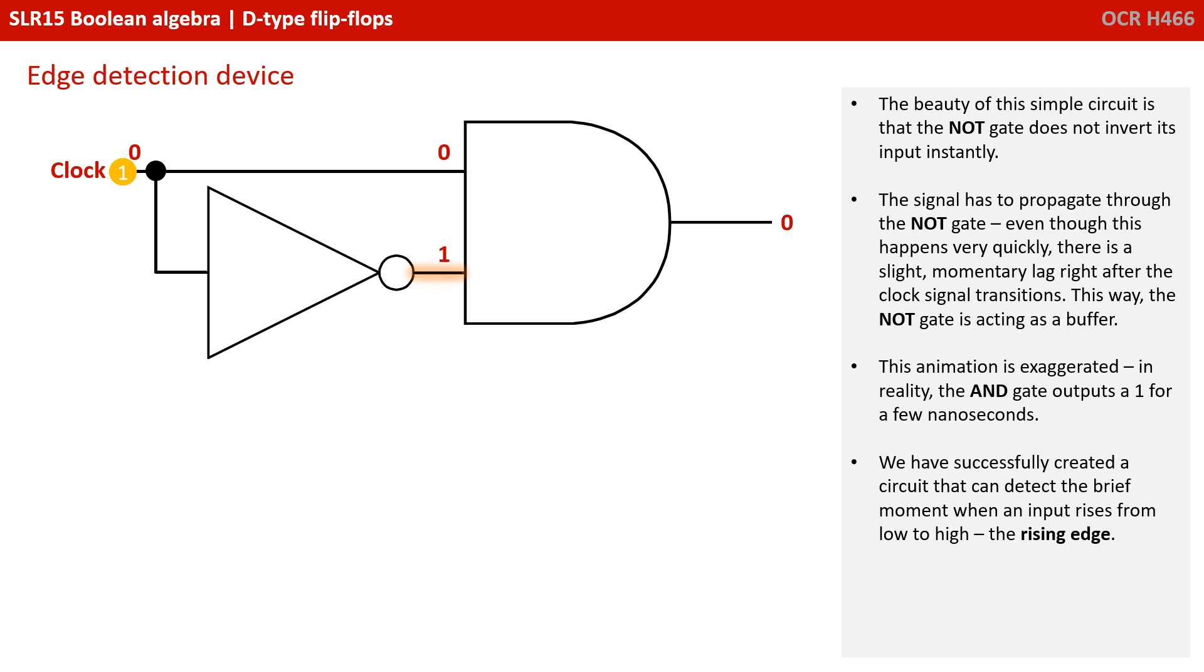The beauty of this simple circuit is that the NOT gate does not invert its input instantly. The signal has to propagate through the NOT gate. Even though this happens very quickly, there is a slight momentary lag after the clock signal transitions. This way the NOT gate is acting as a kind of buffer. This animation is highly exaggerated. In reality, the AND gate outputs are 1 for a few nanoseconds. We've successfully created a circuit that can detect the brief moment when an input rises from low to high, the rising edge.